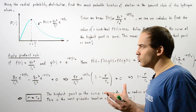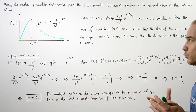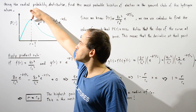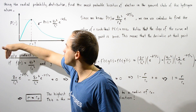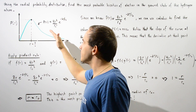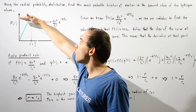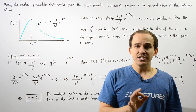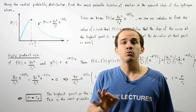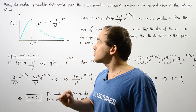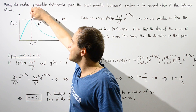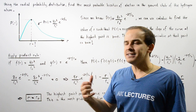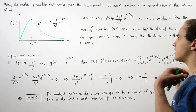Using a bit of calculus, we can find what this r is. Notice on the curve that at this peak point, the slope of the curve changes from positive to negative, and exactly at this position the slope is equal to zero. By definition, the derivative of our function equals the slope at that point, so if we set the derivative equal to zero we can solve for r.